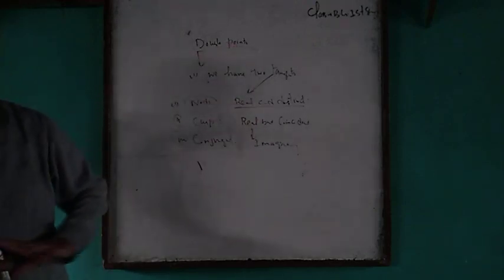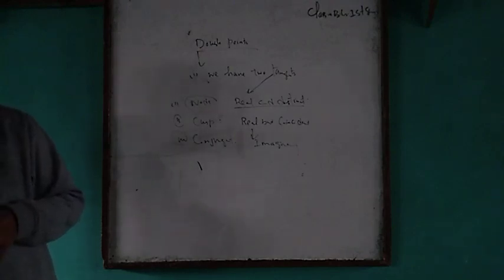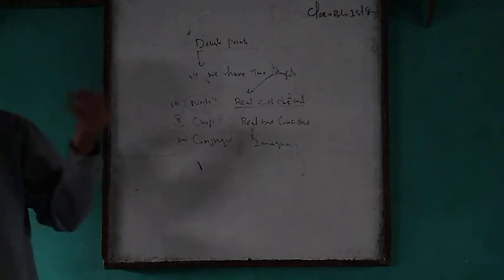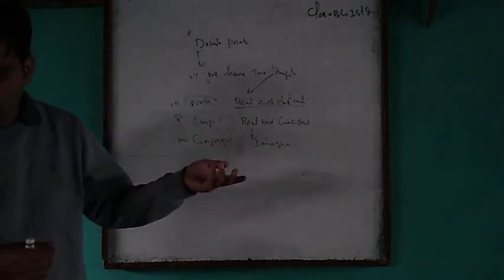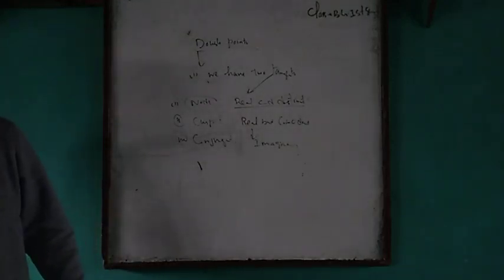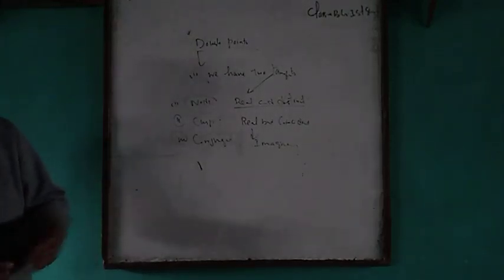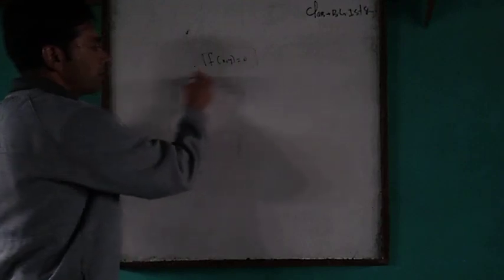So the nature of a double point is divided into three types: node (if real and distinct), cusp (if real but coincident), and conjugate (if imaginary). Now the question arises: if we have a curve, what is the working rule — how can we find the nature of its double points? The working rule is: if we have a given curve f(x, y) = 0, we need to find its double points.